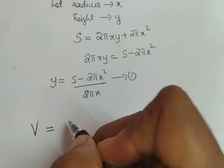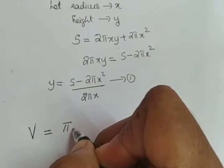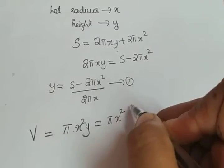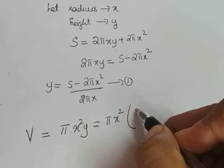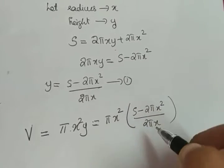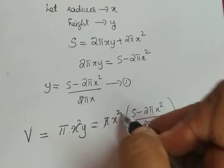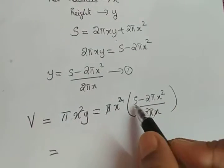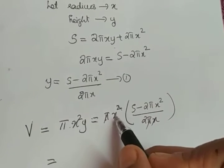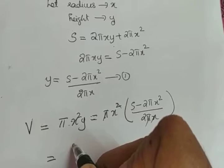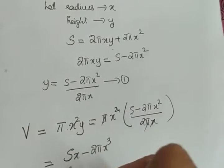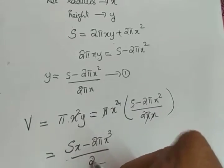Volume of the cylinder is πr²h, so here it will be πx²y. Substituting y = (s − 2πx²) / (2πx), π cancels and one x cancels, giving v = x(s − 2πx²) / 2. Opening the bracket: v = (sx − 2πx³) / 2.